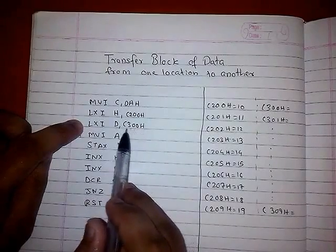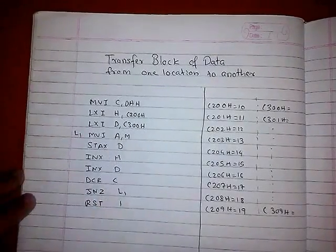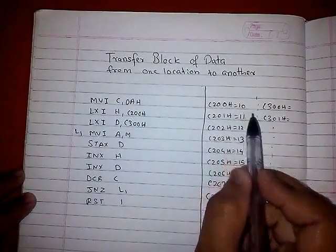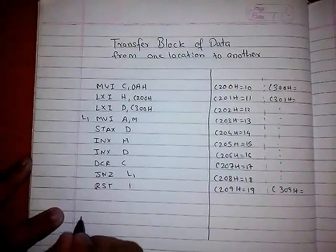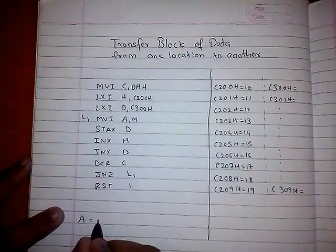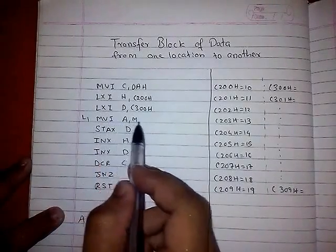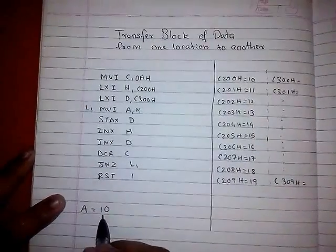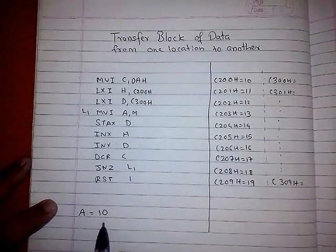This is our memory location. Now we will move the data of this memory location into register A. So here, in register A, we have the data 10. When we do MOV A, M, the data 10 will be inserted into register A.